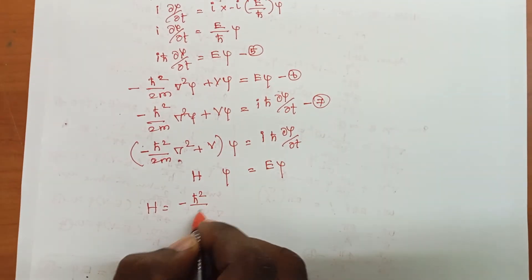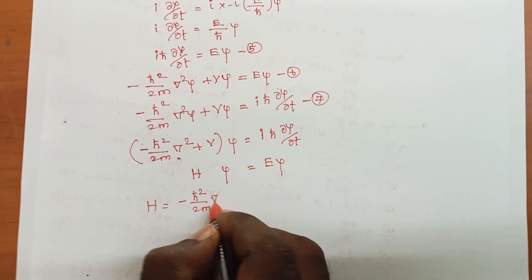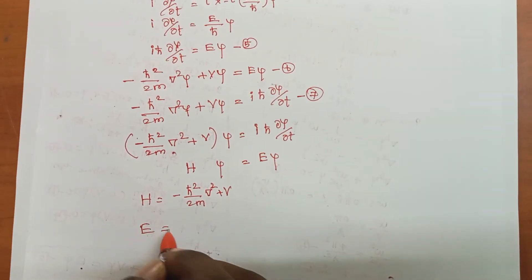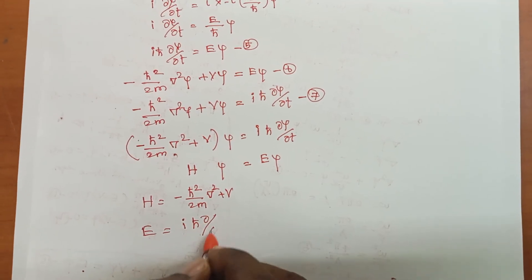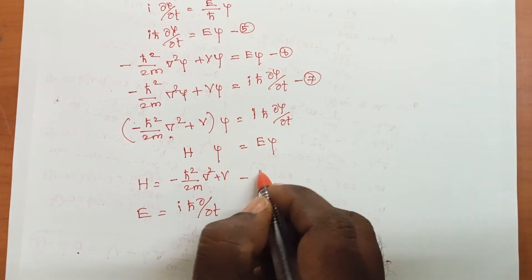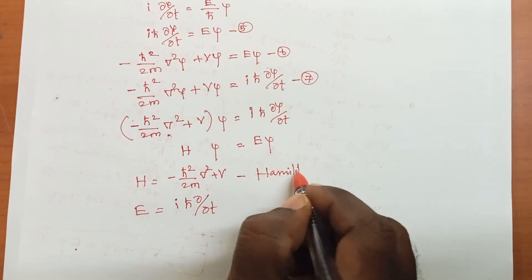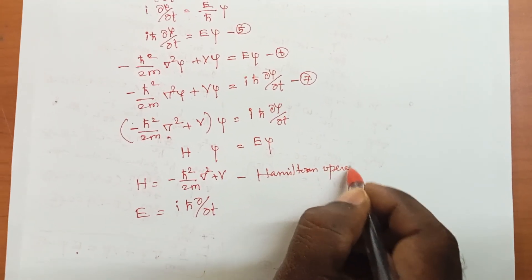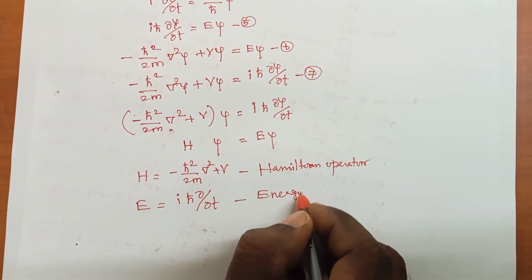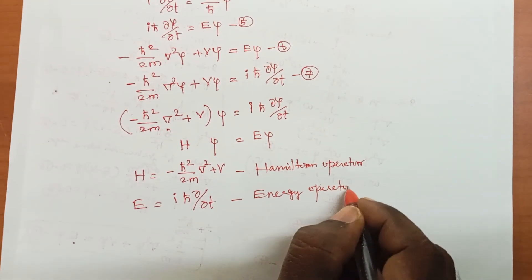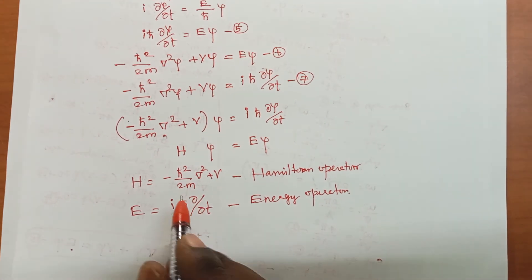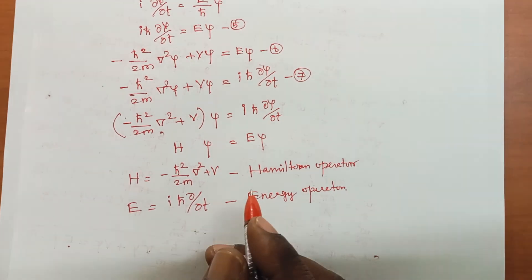Here, minus ℏ²/2m · ∇² plus V is nothing but the Hamiltonian operator, and iℏ · ∂/∂t is the energy operator. This proves the Schrödinger wave equation: Hψ equals Eψ. Thank you.